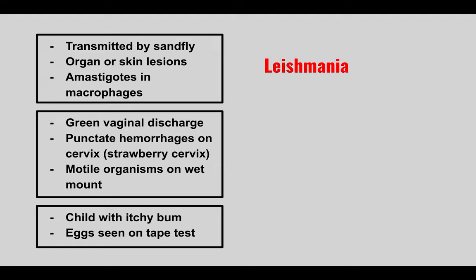The next patient is a female with green vaginal discharge, punctate hemorrhages on the cervix known as a strawberry cervix, and motile organisms on wet mount. This is Trichomonas, which causes the green vaginal discharge. The motile organisms are due to the presence of a flagella, causing trichomoniasis.